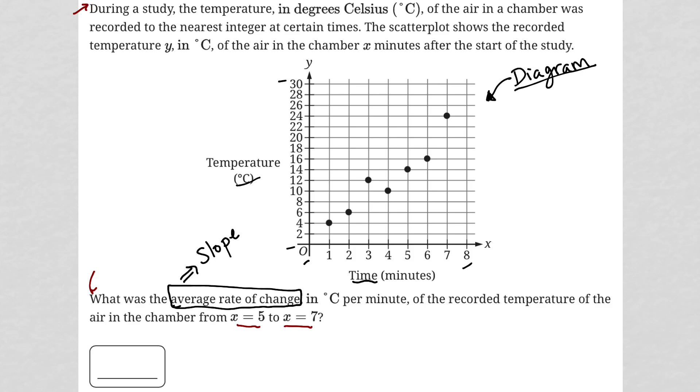And if we have slope, right, I'll write it down here. Slope equals change in y over change in x, otherwise known as y2 minus y1 divided by x2 minus x1.